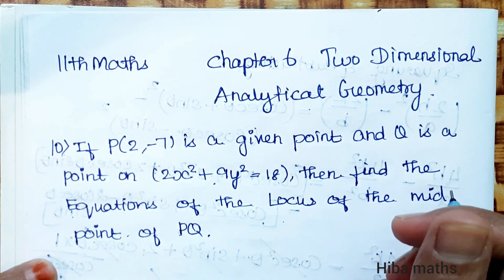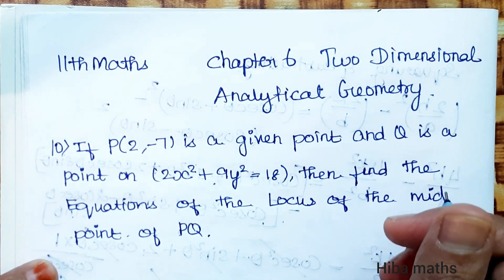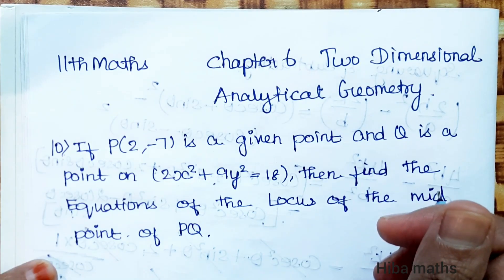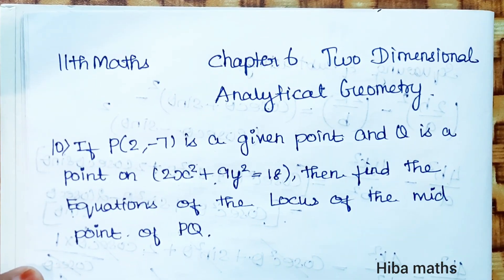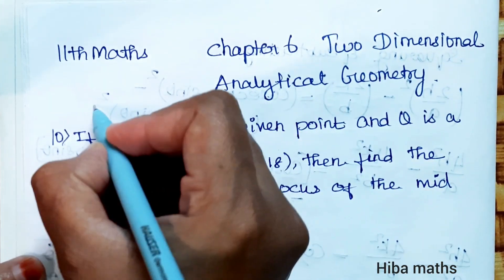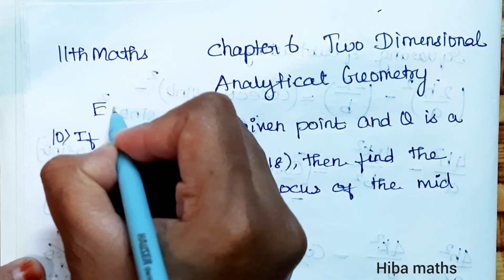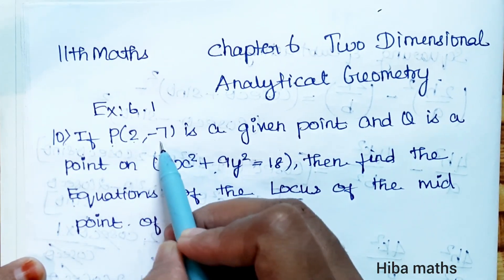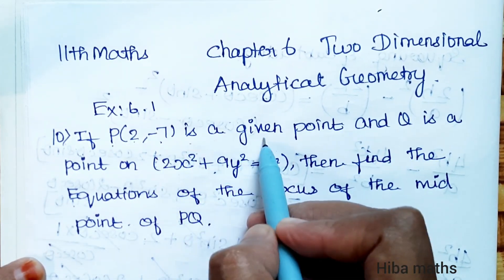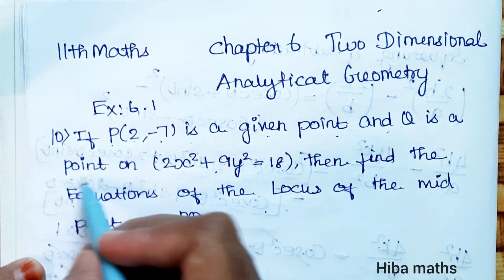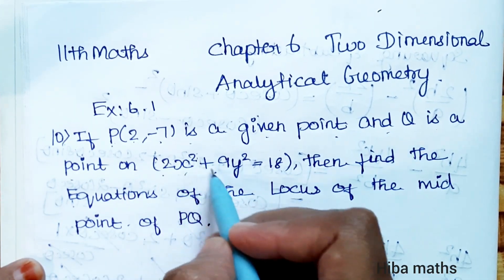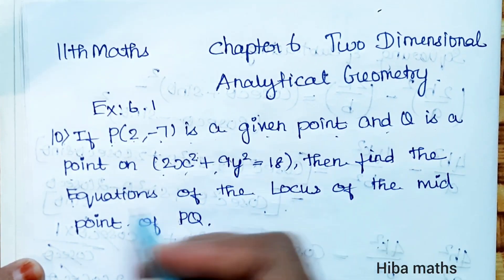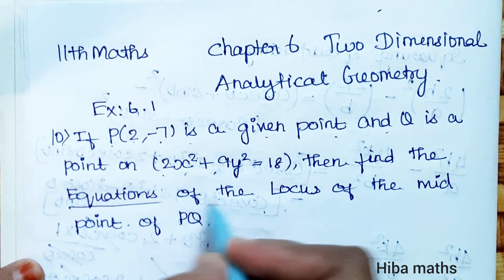Hello students, welcome to Heba Max 11th standard Mathematics, Chapter 6: Two-Dimensional Analytical Geometry. We are solving Exercise 6.1, Question 10. If P(2, -7) is a given point and Q is a point on 2x² + 9y² = 18, then find the equation of the locus of the midpoint of PQ.